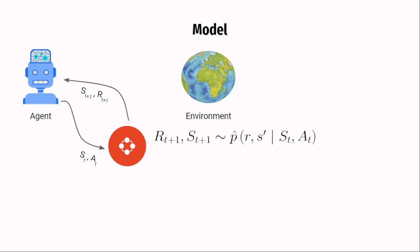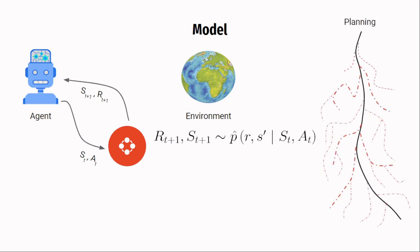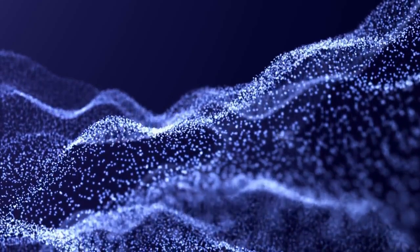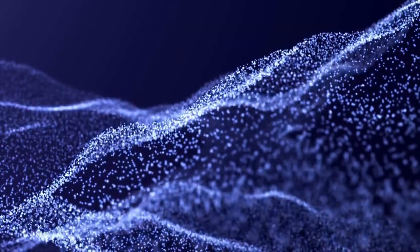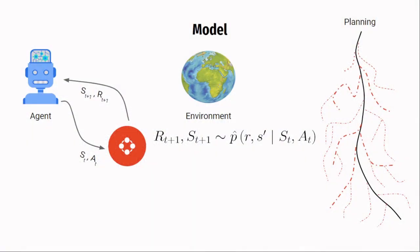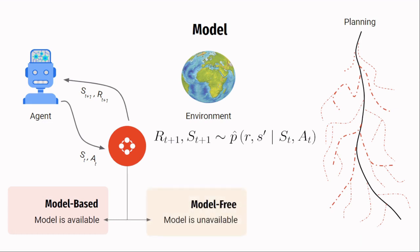The agent doesn't even have to take an action in the environment — it can get the next state and reward from the model and estimate whether the action is suitable or not. This model can be used by the agent to plan its trajectory through the environment. But sometimes the model is not available, for example when the environment is so complex that it cannot be simulated. Methods that use a model are called model-based reinforcement learning methods, and methods that do not are called model-free reinforcement learning methods.